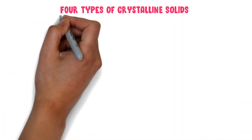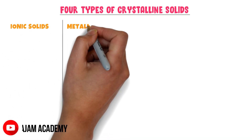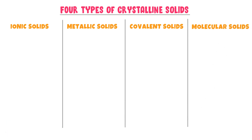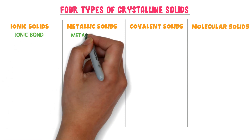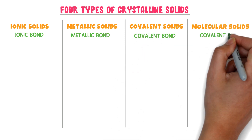Now let me teach you the four types of crystalline solids, which we study in our college course. The four types of crystalline solids are ionic solids, metallic solids, covalent solids, and molecular solids. Ionic solids contain ionic bonds, metallic solids contain metallic bonds, covalent solids contain covalent bonds, and molecular solids also contain covalent bonds.